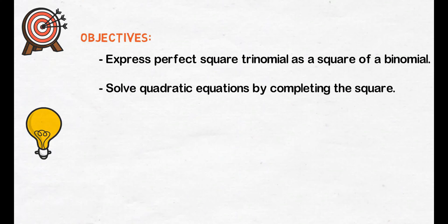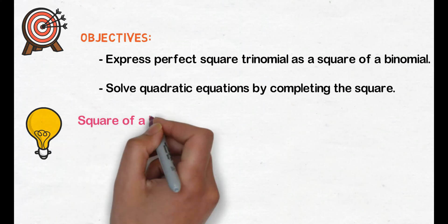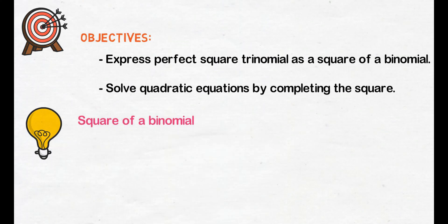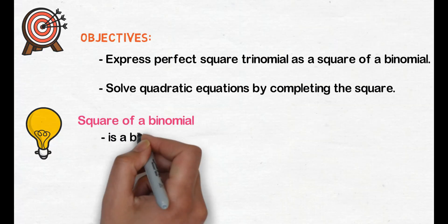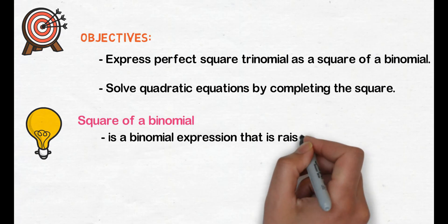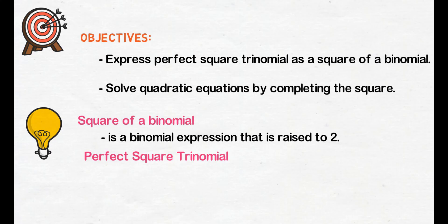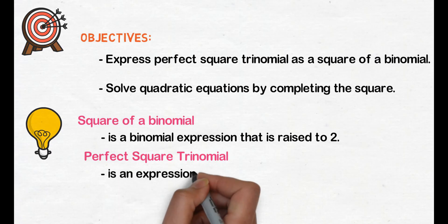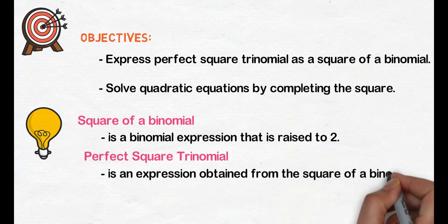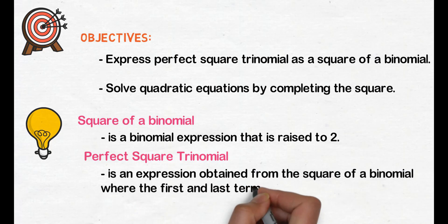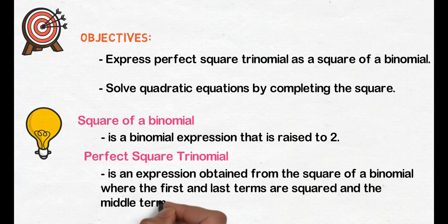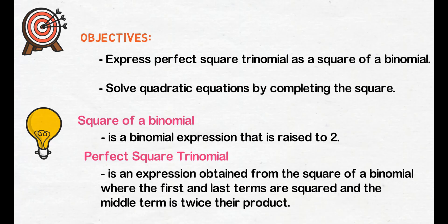Let's define first what is square of a binomial. Square of a binomial is a binomial expression that is raised to 2. Next, define naman natin ang perfect square trinomial. Perfect square trinomial is an expression obtained from the square of a binomial where the first and last terms are squared and the middle term is twice their product.